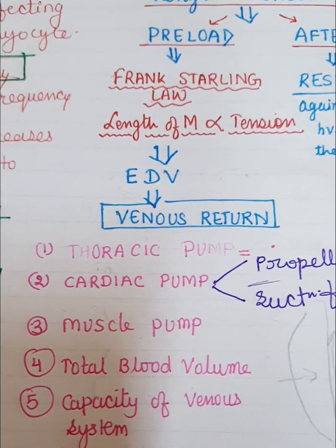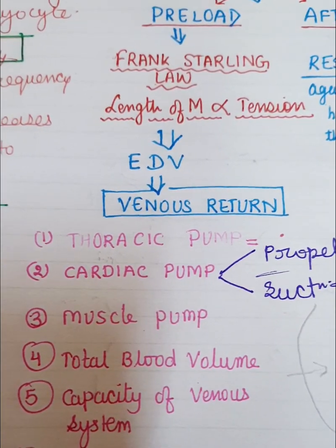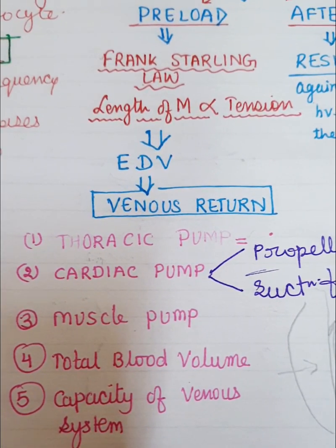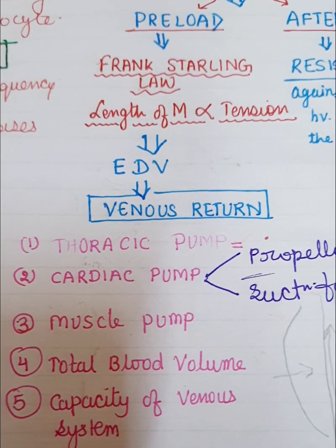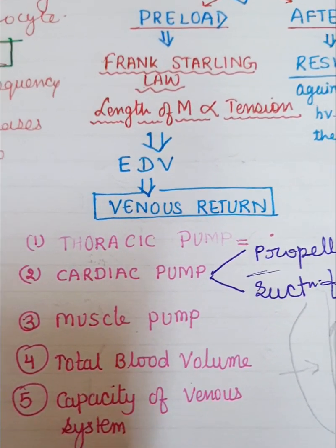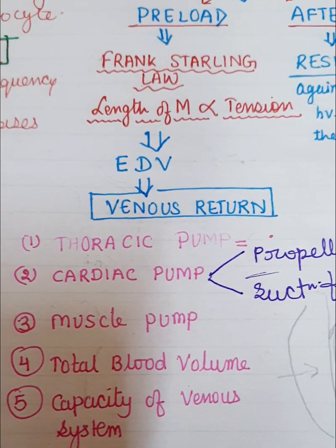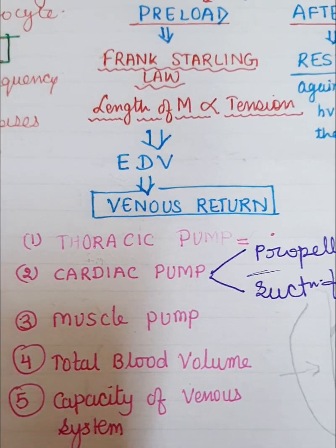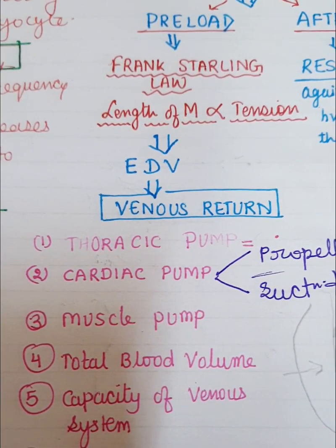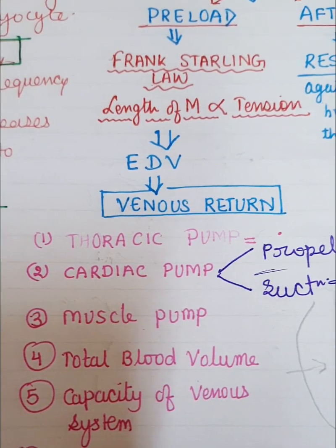Ventricular compliance means the ability of ventricles to accommodate and propel blood. Whenever there is damage to the myocardium, this compliance — this ability of the ventricle — decreases, causing decreased venous return. Decreased venous return also occurs in infiltrative diseases of the myocardium, when deposition of certain substances within the myocardium causes decreased ability of the myocardium to contract and propel blood.